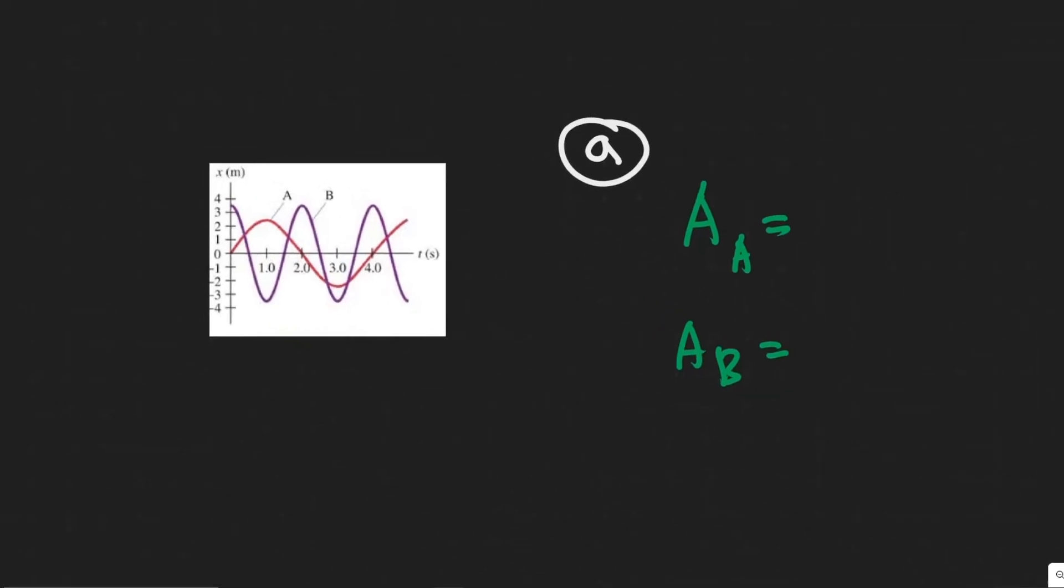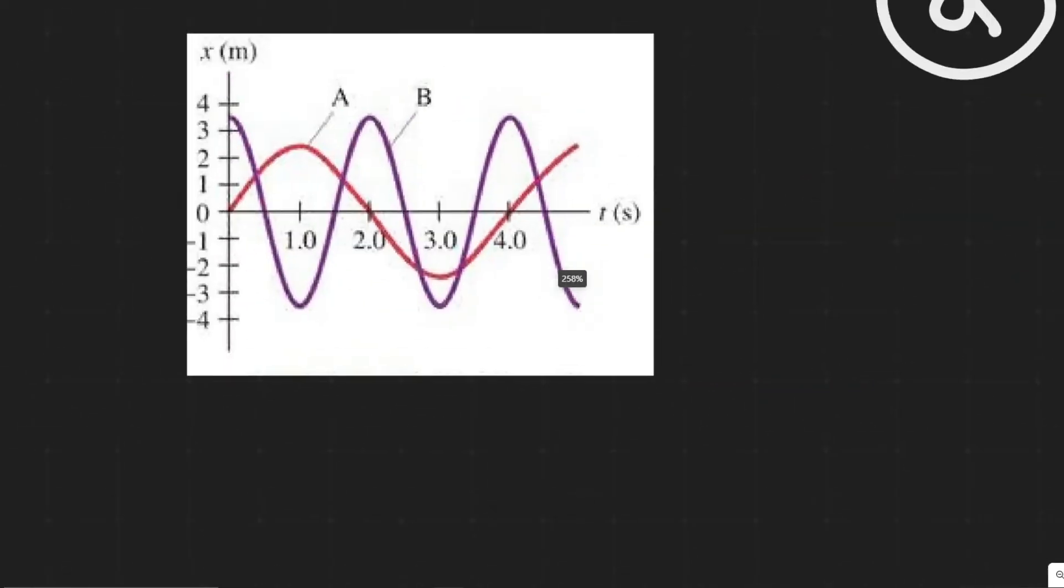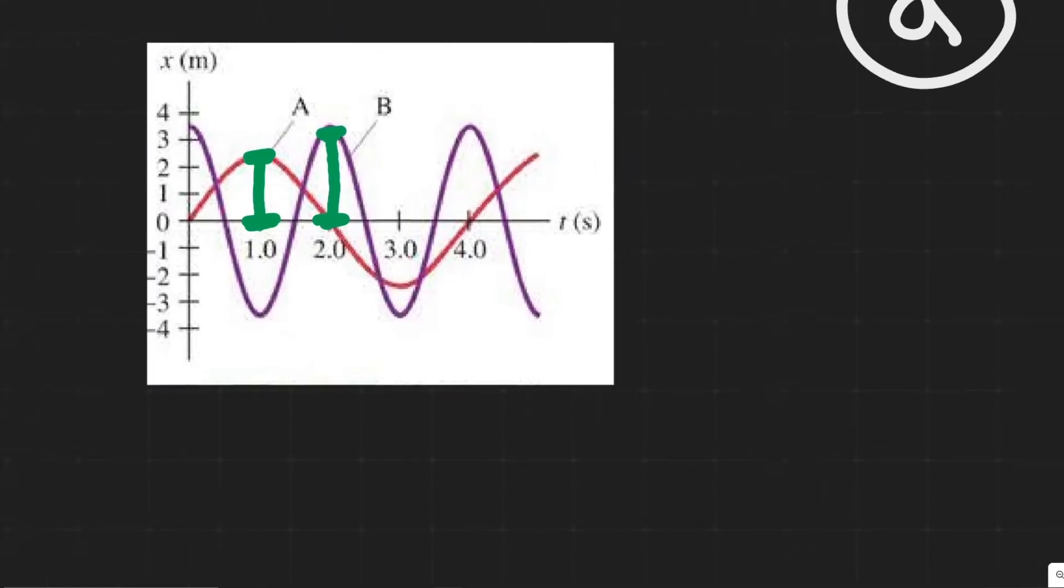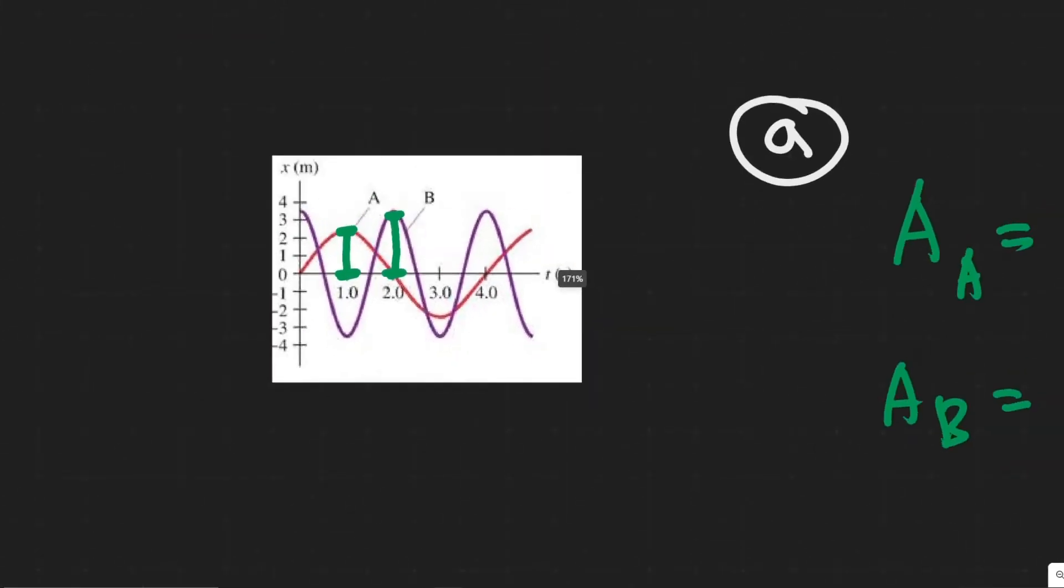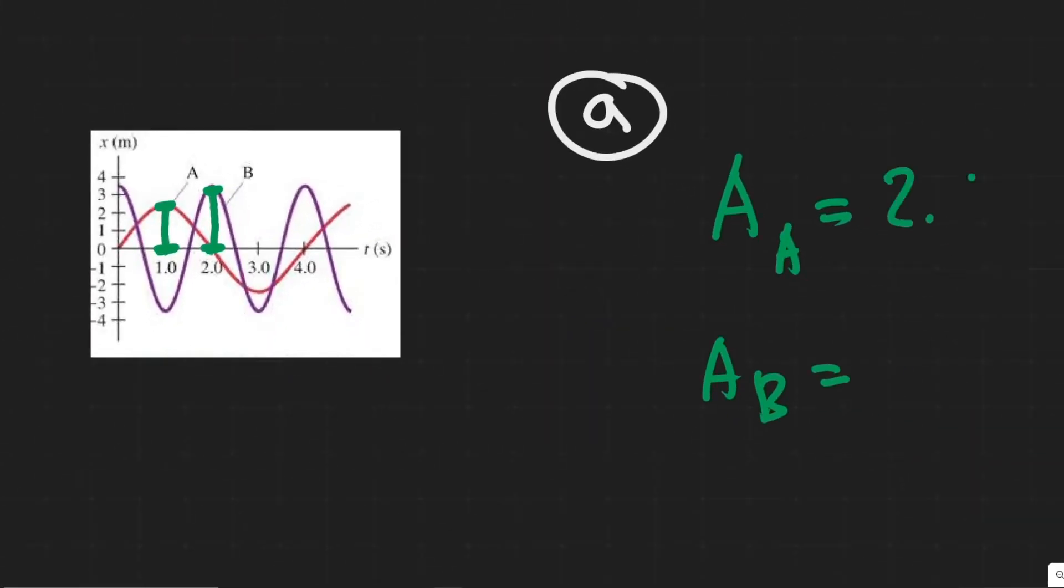So for A, what we're finding is the amplitude for both waves. So I'll call it A_A, the amplitude for A, and the amplitude for B. Now what is the amplitude? The amplitude is essentially the maximum extent of an oscillation. So this whole thing is oscillating, right? So what is the maximum it extends? Essentially what it is is this distance right here for each of these waves, basically to its peak or the farthest distance away from the center. So this distance right here for A is 2.5 meters. So its amplitude is 2.5 meters.